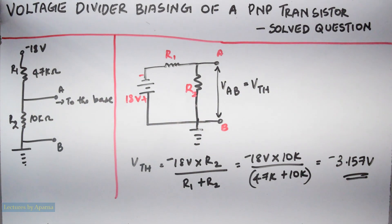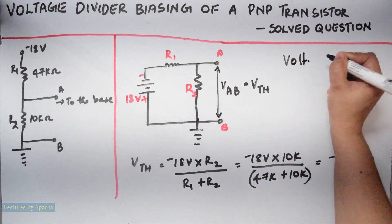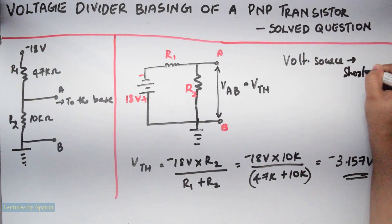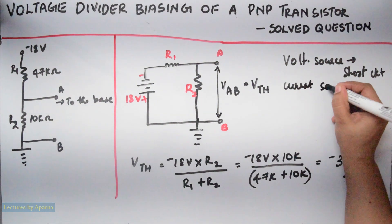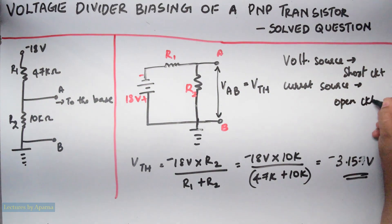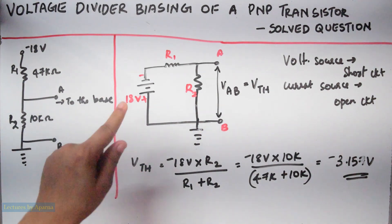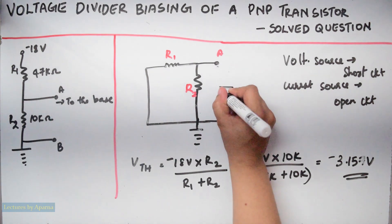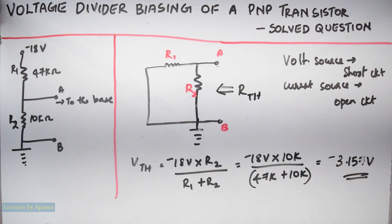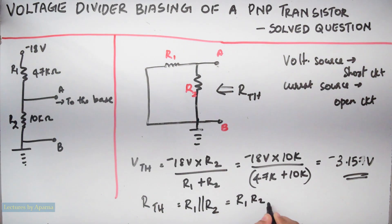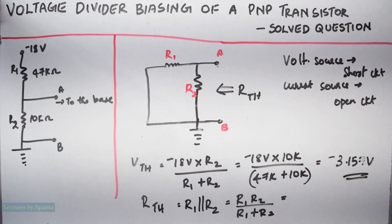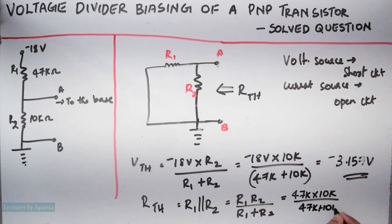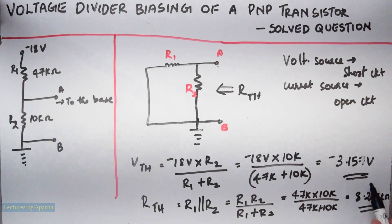Now we have to find RTH, the Thevenin's resistance. For that, replace any voltage source present in the circuit with a short circuit, and any current source with an open circuit. In this circuit we have only a voltage source, so replace it with a short circuit. We have to calculate RTH looking from this side. RTH equals R1 parallel to R2, which is R1 times R2 divided by R1 plus R2. Substituting: 47K times 10K divided by 47K plus 10K, which equals 8.245 kilohms. So this is RTH and this is VTH.